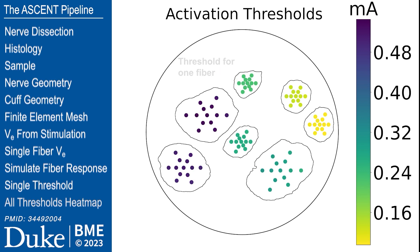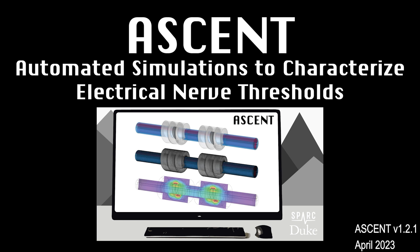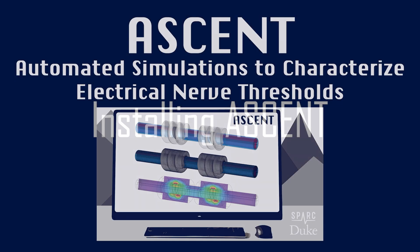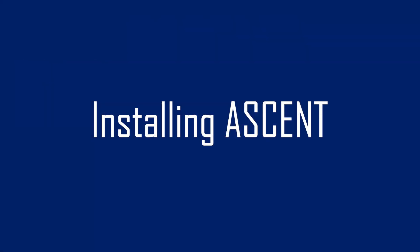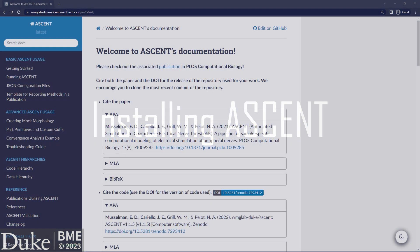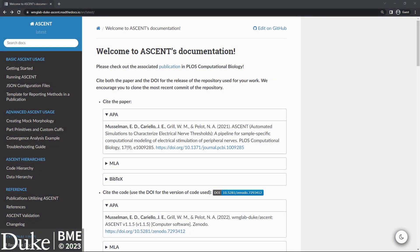This video is intended to help first-time users in getting started with ASCENT. I will walk you through setup of version 1.2.1 of the ASCENT pipeline, followed by the implementation and simulation of a complete model of nerve stimulation. I'm running ASCENT on a Windows machine, but ASCENT can also be run on macOS and Linux. The installation process across operating systems is quite similar, and I will highlight differences as we go through the process together.